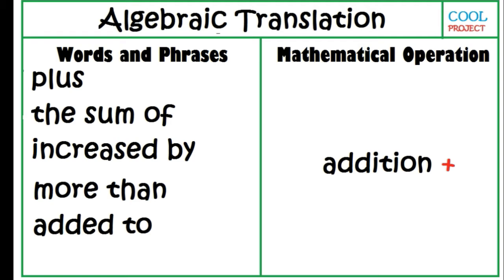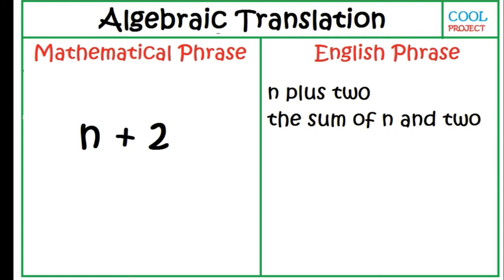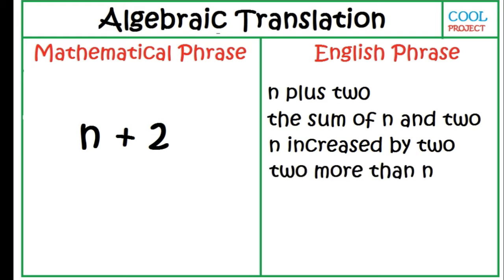This means that a single mathematical phrase can be translated in many ways. Example: N plus 2. The sum of N and 2. N increased by 2. 2 more than N. 2 added to N.